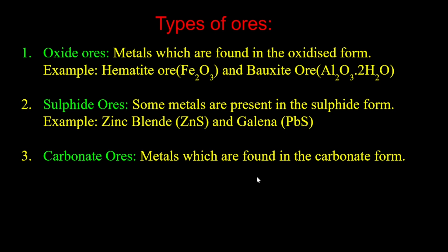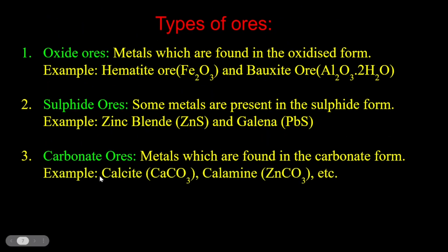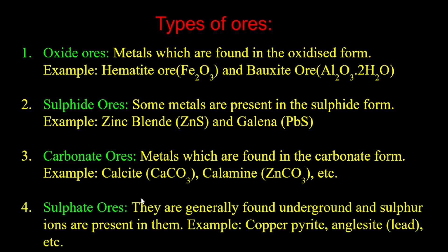Next is carbonate ore. Carbonate ores contain metals found in carbonate form, such as calcite (CaCO3). Sulfide ores are generally found underground and sulfur ions are present in them. Examples include copper pyrite and anglesite, where copper pyrite is a copper ore and anglesite is a lead ore.